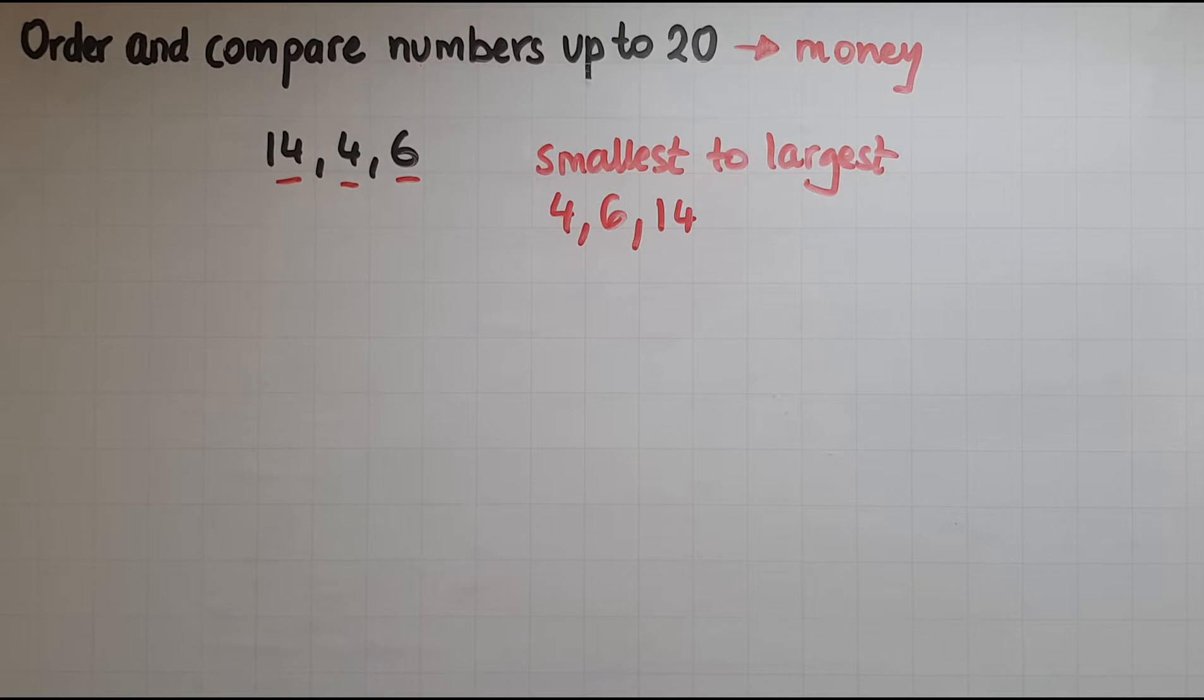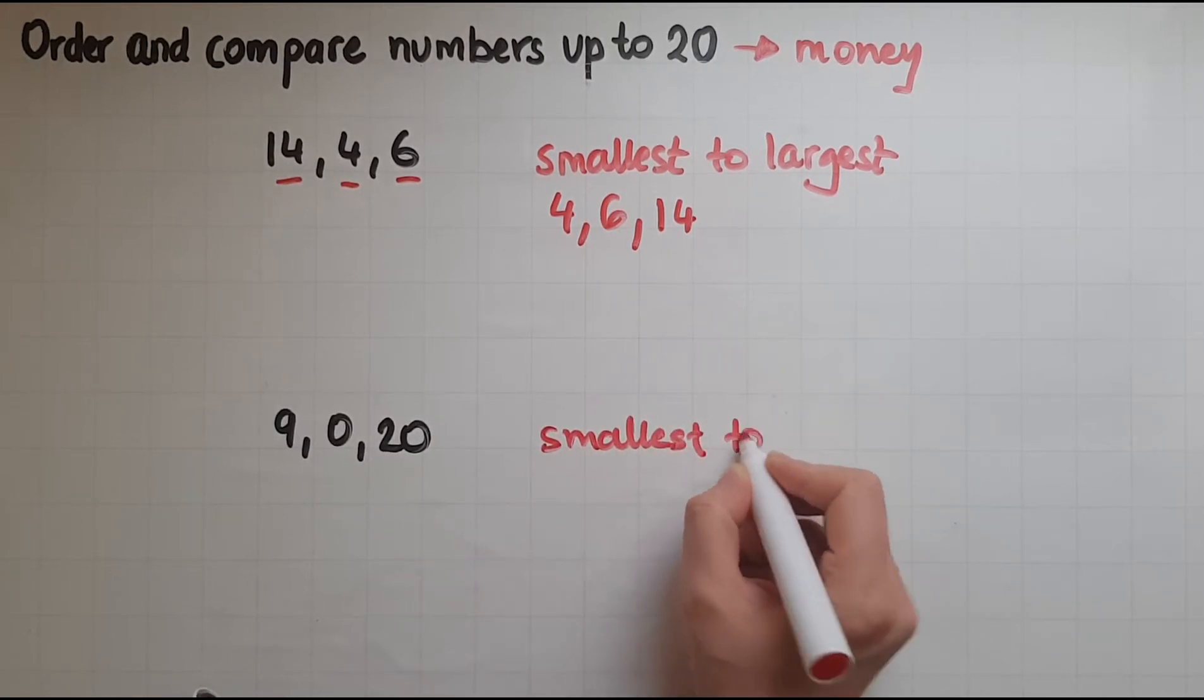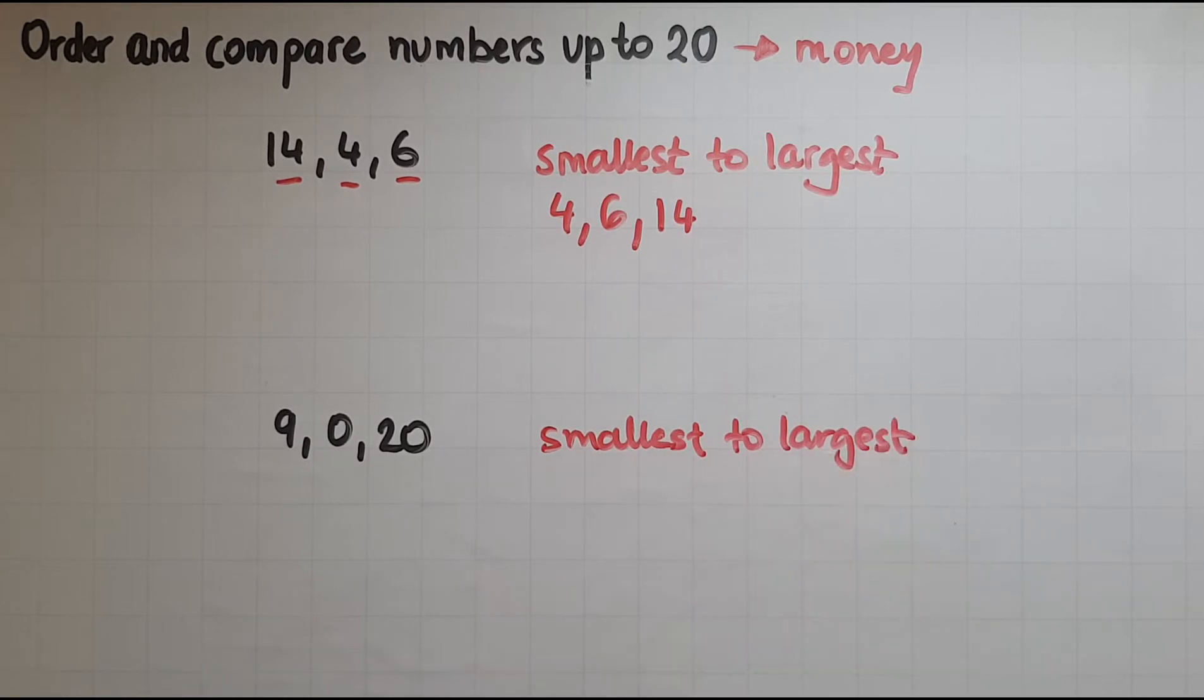Now I will write another three numbers: 9, 0, and 20. Ordering them again from the smallest to the largest. I'll try counting again. So I start the number sequence with 0. So 0 comes first, then 1, 2, 3, 4, 5, 6, 7, 8, 9, 10, 11, 12, 13, 14, 15, 16, 17, 18, 19, 20. So 20 is the last one.